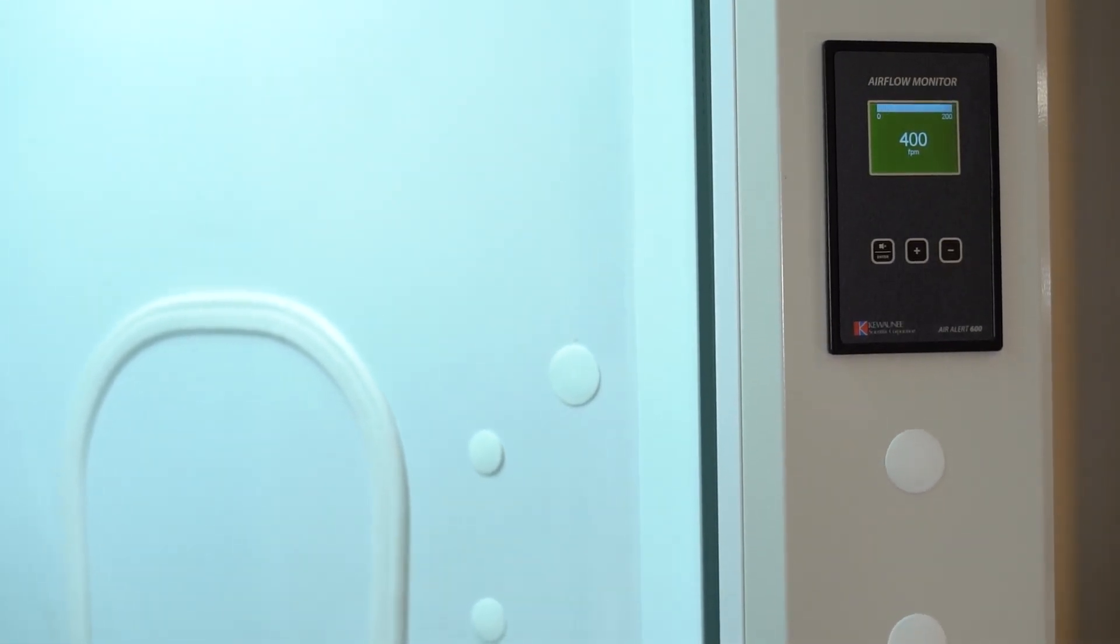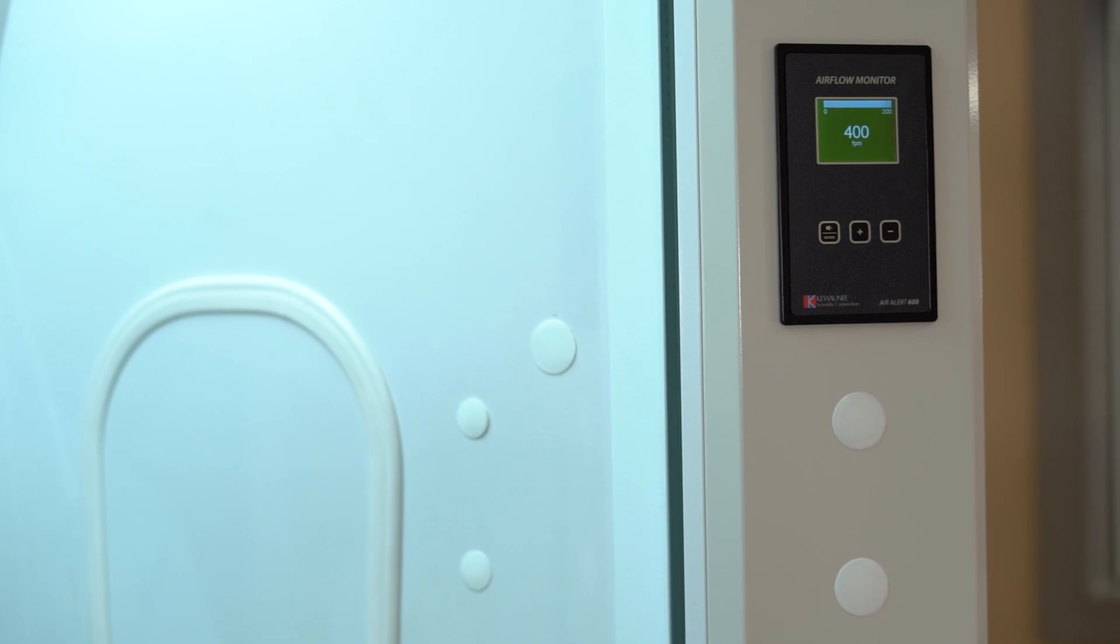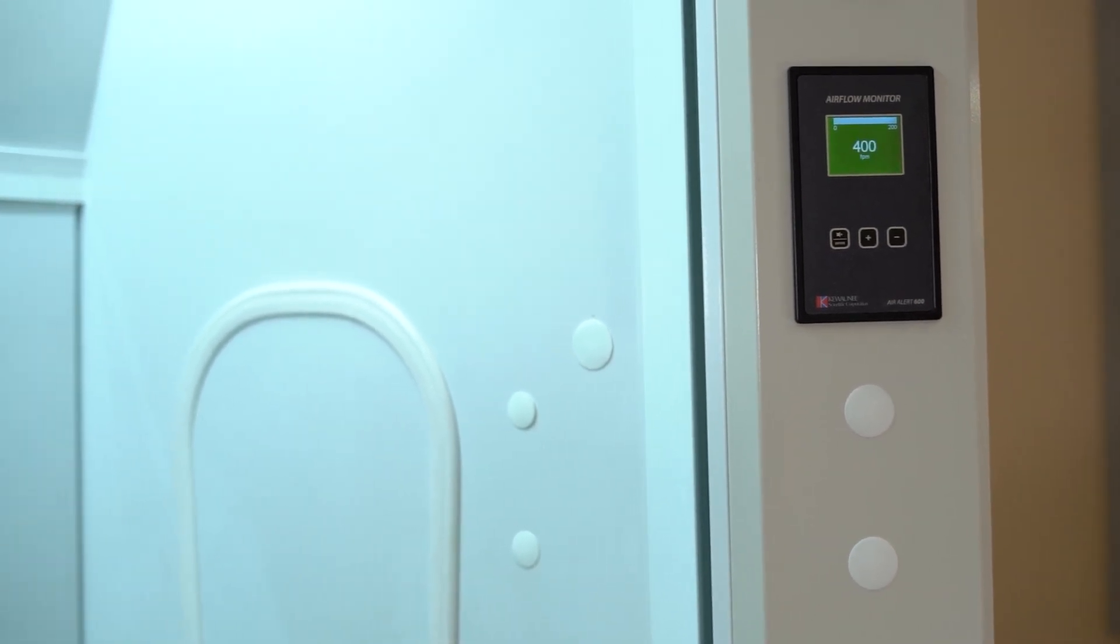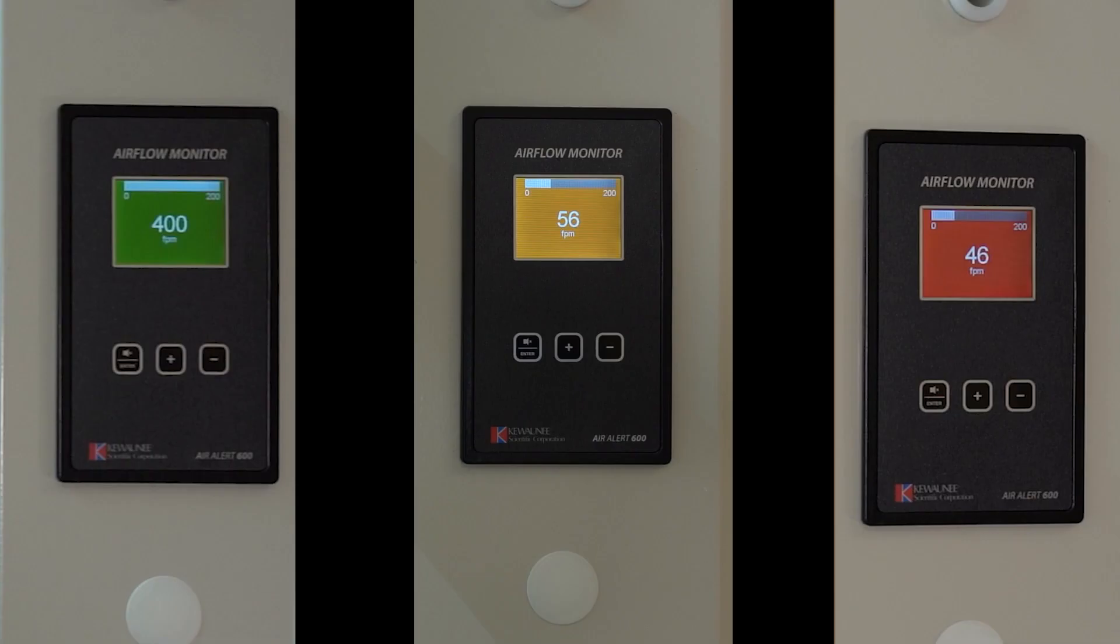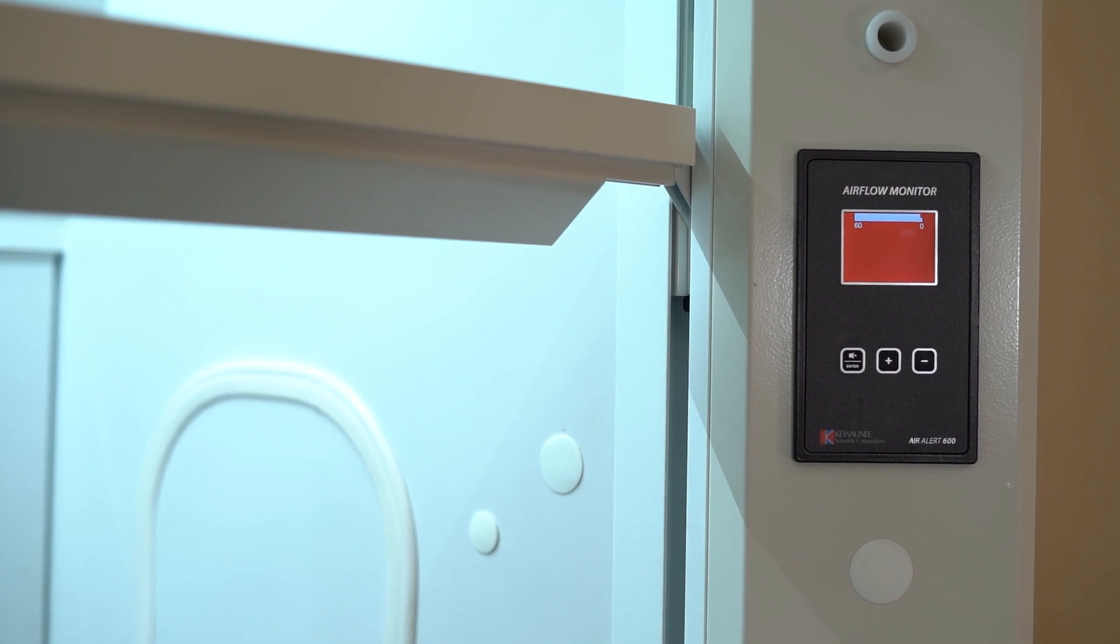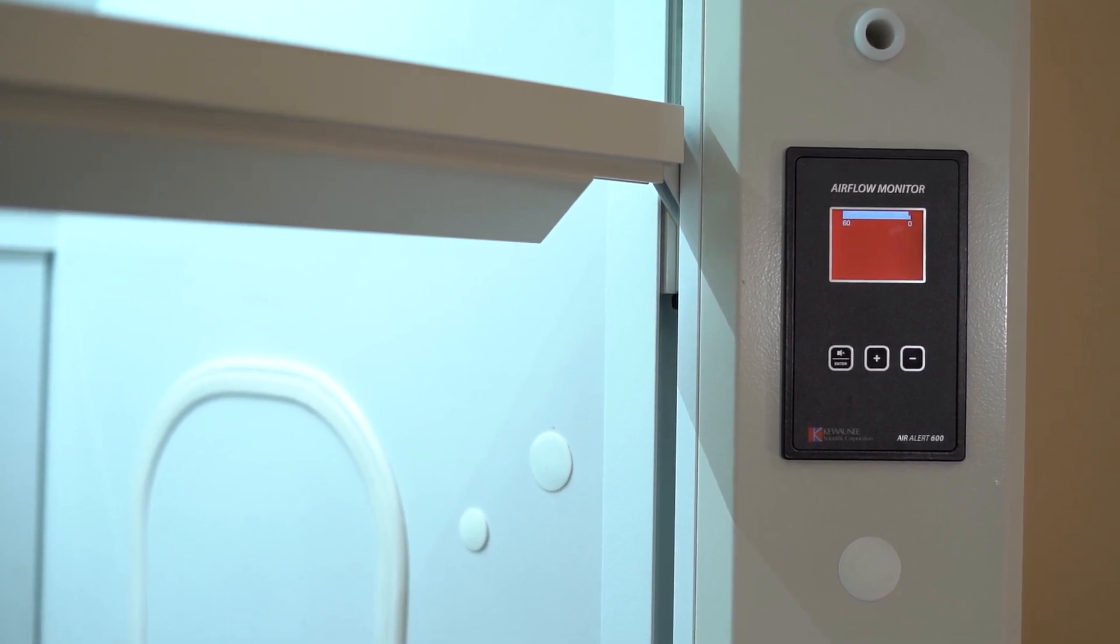This airflow monitor's main function is to show a visual display of the face velocity in feet per minute as well as a colored background depending on preset velocities. Green is a safe state, yellow is warning, red is failure state. There is also an audible alarm during the failure state.